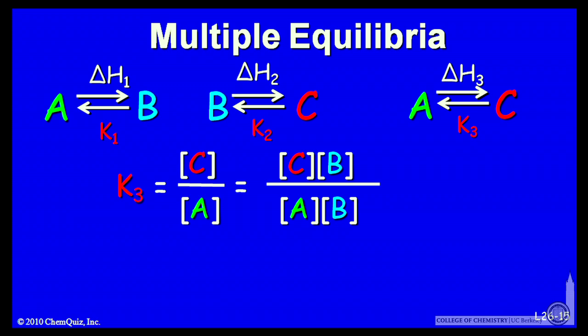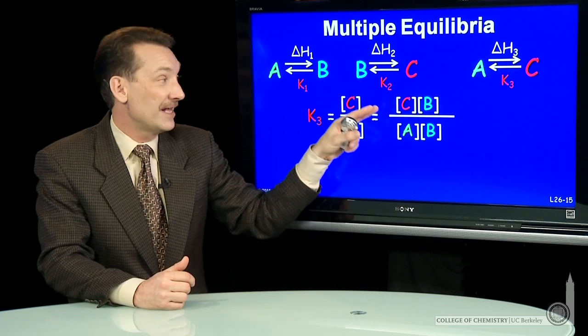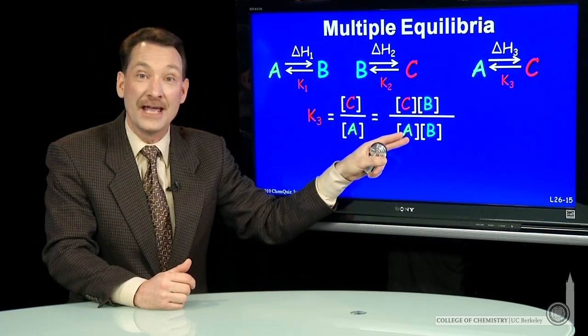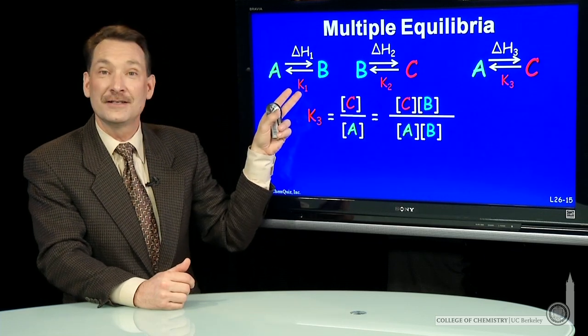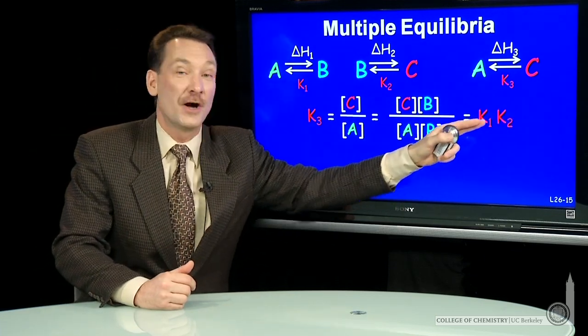But what I recognize is now I have C over B. That's the equilibrium constant K2. And I have B over A. That's the equilibrium constant K1. So K3 is actually K1 times K2.